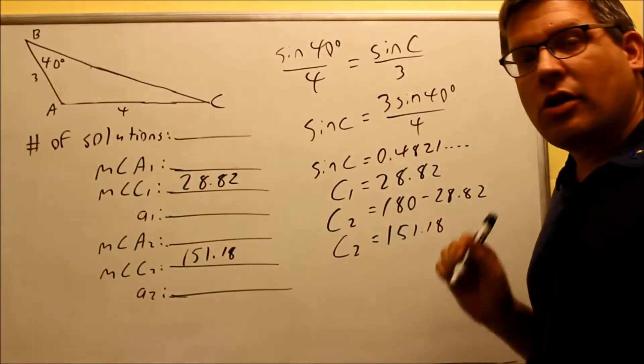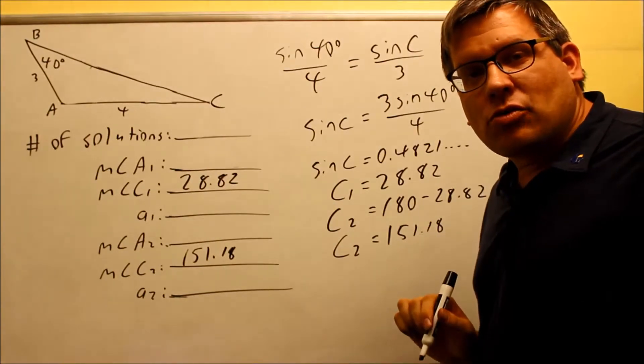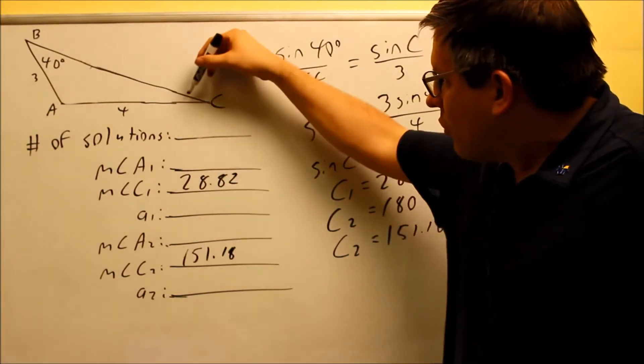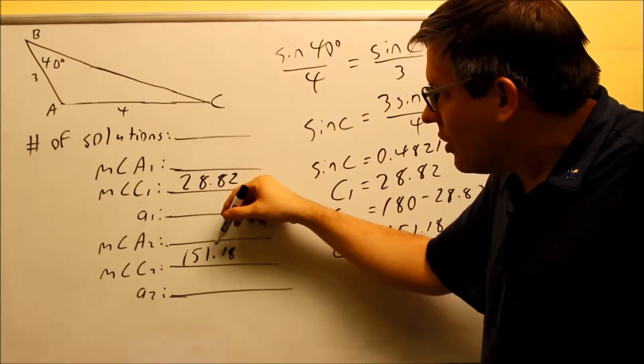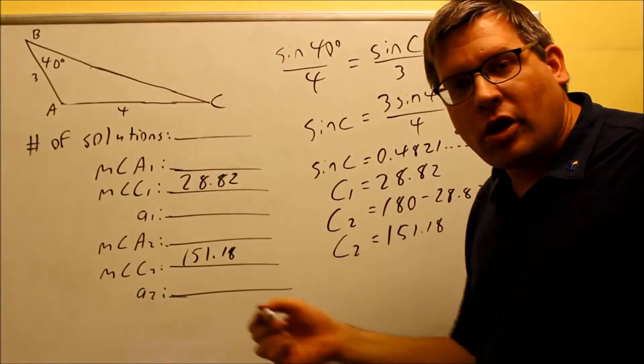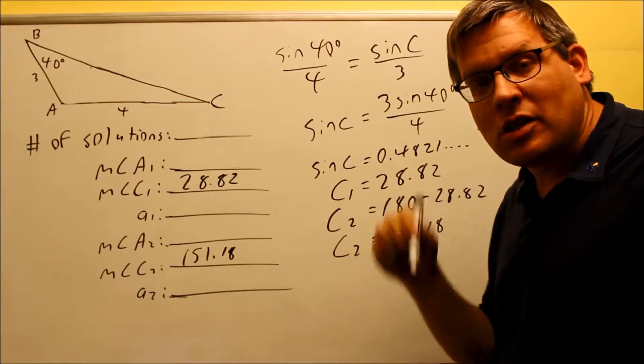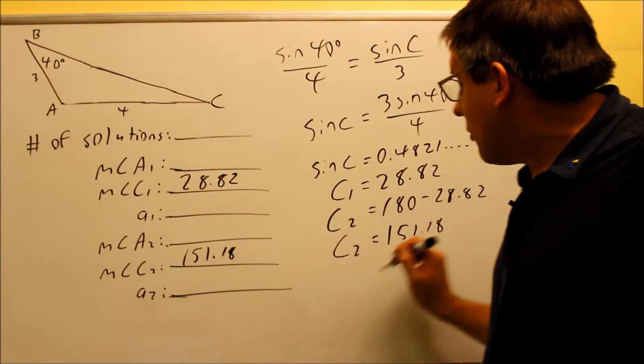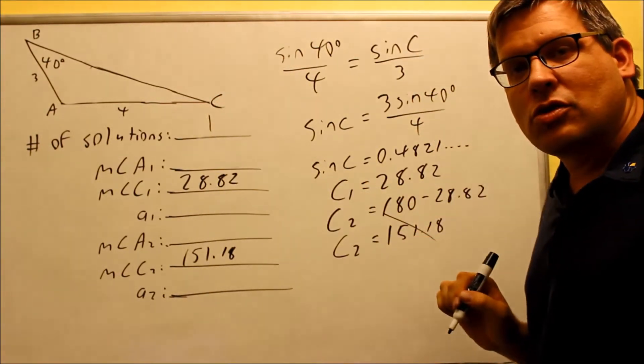Now let's talk about the secondary solution. Notice that I already have a 40 degrees inside that triangle. If for some reason this was really equal to 151.18, then I wouldn't really have a triangle there. Because I have 150 plus 40, that gives me an angle that's more than 180. That's not possible. Triangles can only have a maximum or have an equal value of 180 degrees only. So therefore, I know that this is not going to be a possible solution. So therefore, I know I should only have one solution here.